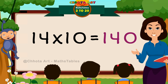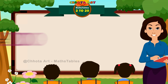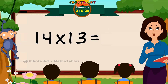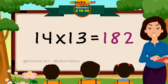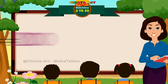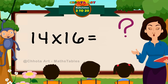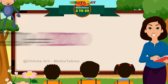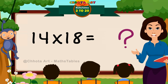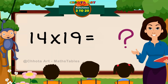14 tens are 140. 14 tens are 140. 14 elevens are 154. 14 twelves are 168. 14 thirteens are 182. 14 fourteens are 196. 14 fifteens are 210. 14 sixteens are 224. 14 seventeens are 238. 14 eighteens are 252. 14 nineteens are 266.